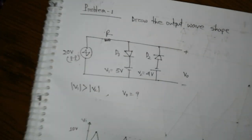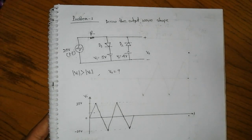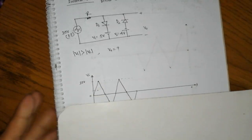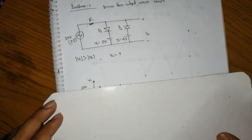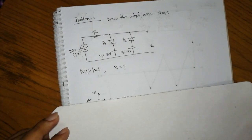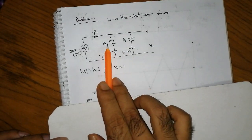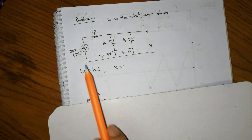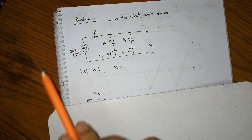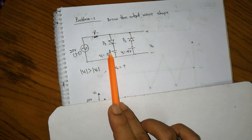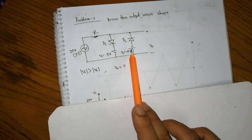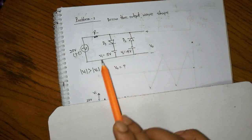Problem No. 1 involves the duty diode. We have Diode 1, Diode 2, with values of 20V, 5V, and 4V.